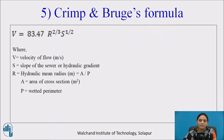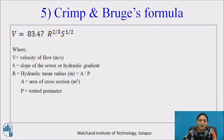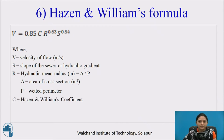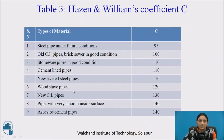The fifth empirical formula is Crimp and Brugg's formula: V is equal to 83.47 times R to the power 2/3 times S to the power 1/2. It is similar to Manning's formula if 1/N equals 83.47. The sixth formula is Hazen and Williams' formula: V is equal to 0.85 times C times R to the power 0.63 times S to the power 0.54. Here C is the Hazen and Williams coefficient, and Table 3 gives the value of C for various types of pipe material.